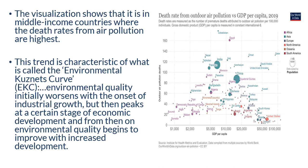In this diagram, we're looking at the death rate from outdoor air pollution versus GDP per capita. What's being displayed is the idea of the Kuznets curve: as a country first develops, environmental quality initially worsens with the onset of industrial growth, but then peaks at a certain stage of economic development. From then on, environmental quality begins to improve with increased development — an inverted U shape. Very poor countries don't have much industrial production, so there's not much pollution. As countries start developing, pollution increases. But once countries continue to get richer, they have the resources to tackle pollution.